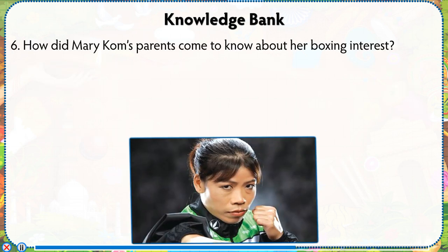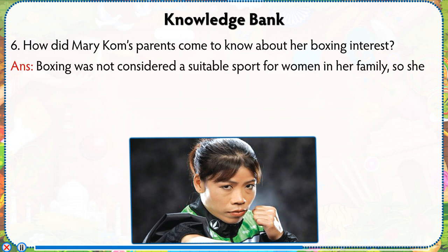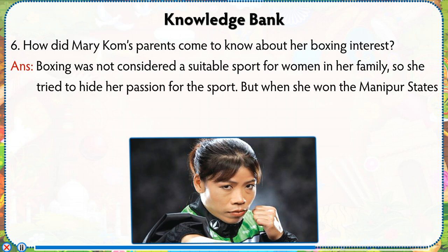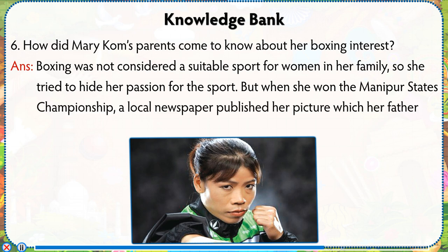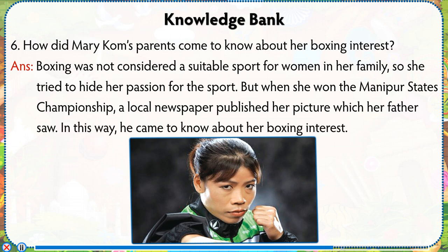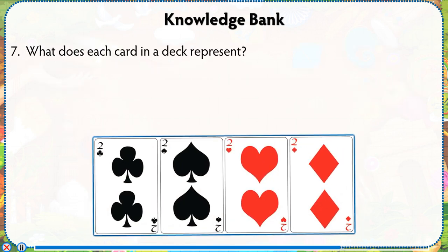Number 6: How did Mary Kom's parents come to know about her boxing interest? Answer: Boxing was not considered a suitable sport for women in her family, so she tried to hide her passion for the sport. But when she won the Manipur State Championship, a local newspaper published her picture, which her father saw. In this way he came to know about her boxing interest.